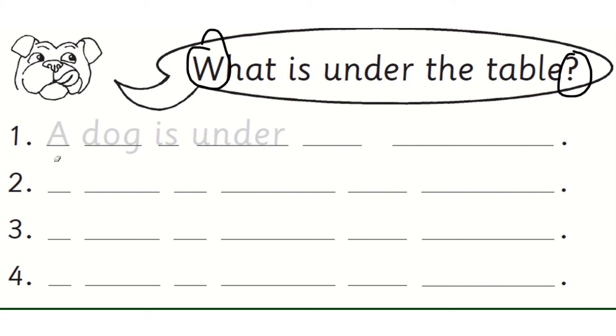You will write, number one, a dog is under the table. And then try to remember three other things that were under the table. Don't forget, if you need to go back and have a little look at the picture, you can do.